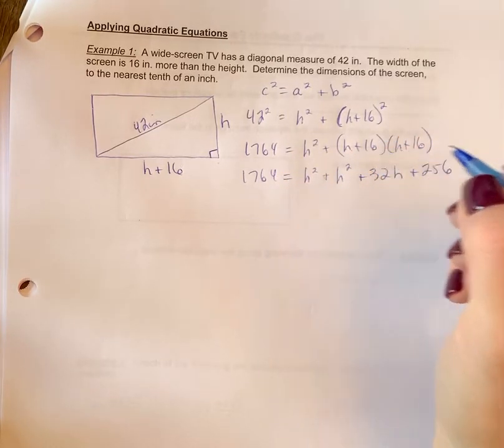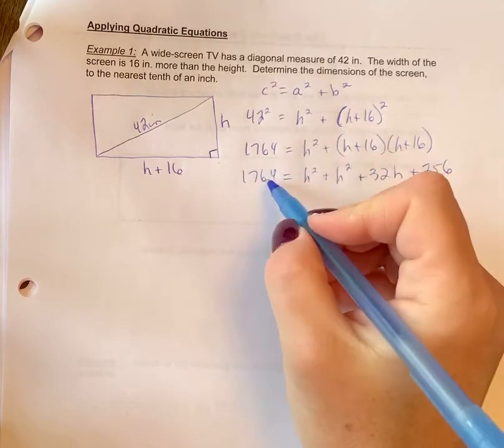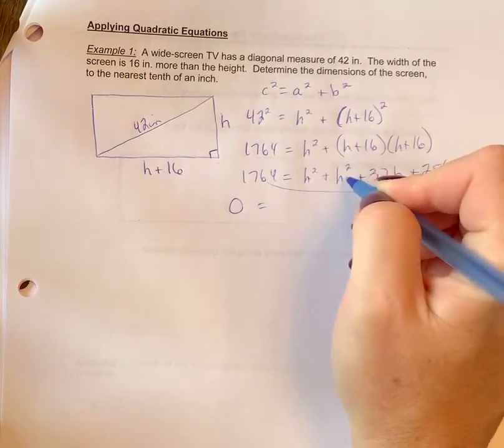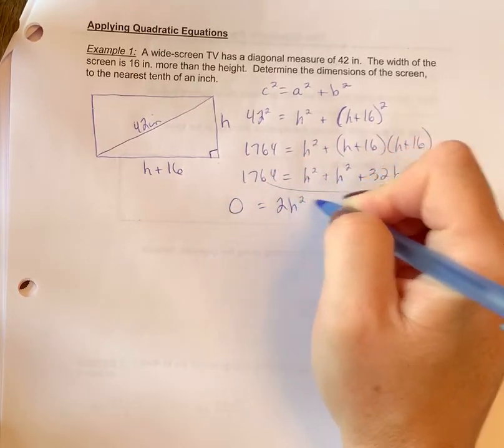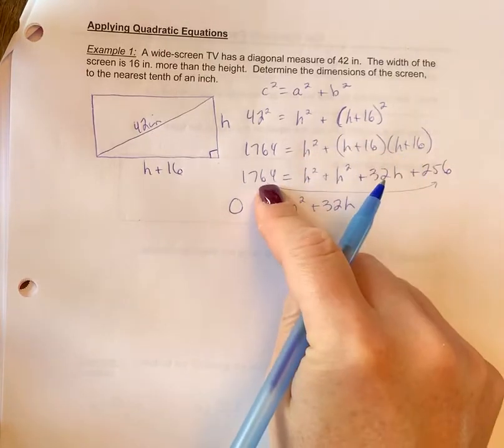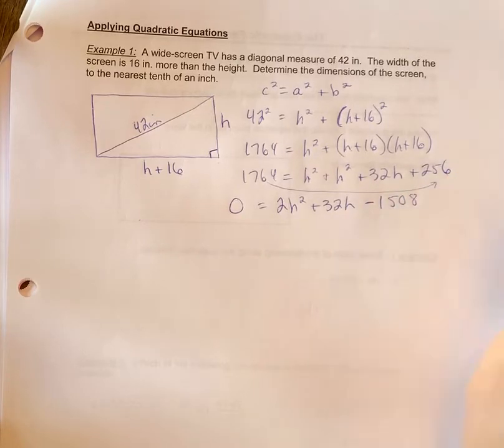Okay, combine like terms, and I'm also at the same time going to move the 1764 over to this side, so I'm going to subtract. Okay, so that I have zero on this side, h squared plus h squared is 2h squared plus 32h, and then 256 minus 1764 is going to give me negative 1508.